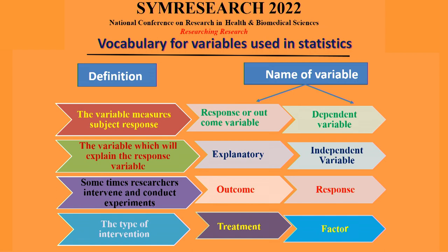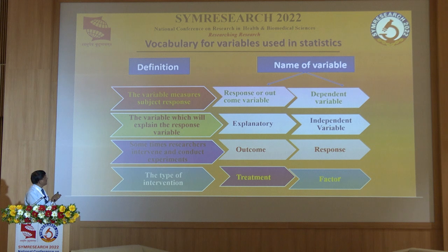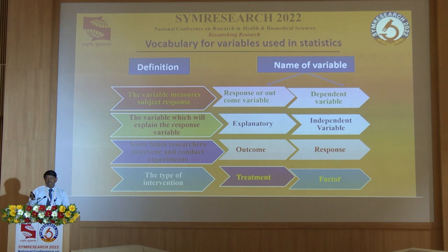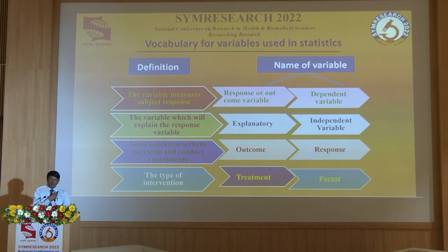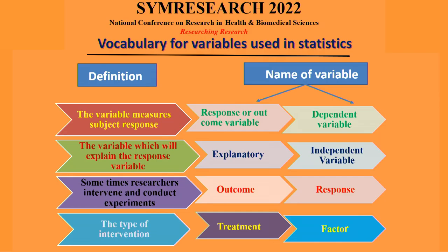Also, regarding naming of variables: the variable that measures the subject's response is called the response, outcome variable, or dependent variable — all are the same. The variable that explains the response variable is the explanatory variable or independent variable. Don't get confused: explanatory variable and independent variable are the same. Similarly, outcome and response are the same; treatment and factor are the same.